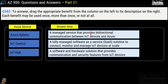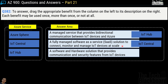Now let's do a drag and drop kind of question. Question number 382. You are given some Azure services on the left and definitions on the right, and you have to match them. The services are Azure Sphere, IoT Central, and IoT Hub. First definition: a managed service that provides bi-directional communication between IoT devices and Azure — this is IoT Hub. Second: a fully managed software as a service solution to connect, monitor and manage IoT devices at scale — this is IoT Central. Third: a software and hardware solution that provides communication and security features from IoT devices — this is Azure Sphere.